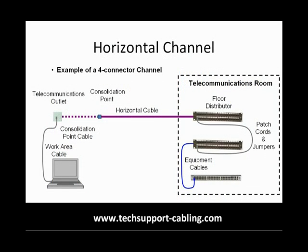Let's say for example that we plan to create a Class E channel using Category 6 components, with a cross-connect in the telecoms room and including a consolidation point.